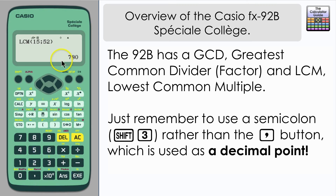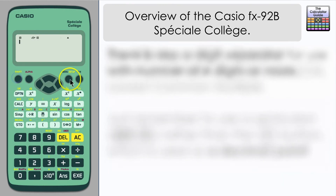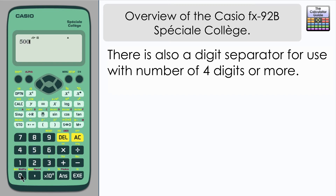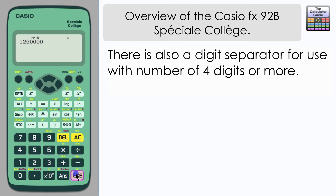Press equals and here we have the solution 780 — the lowest common multiple of those two numbers. The setup menu also features a digit separator, and if you switch that on, any number with greater than four digits — for example 5,000 — will have its digits separated every three places. Trying that with 1,250,000, you can see two separators featured every 10-to-the-3 digits.